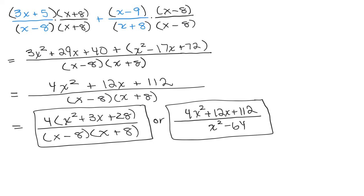Some teachers might want you to leave it in factored form, and some would want you to multiply them out — but they are equivalent to each other. All right, so there are four examples of adding rational expressions. It is slightly more complicated when you have a minus sign, so be careful and see my other videos for that.